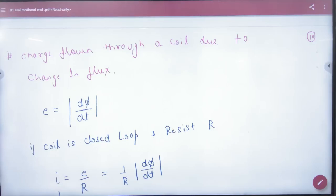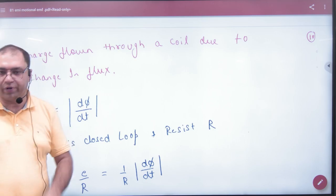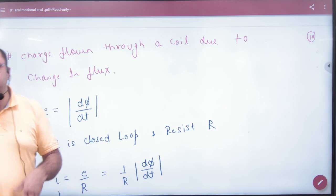Charge flown through a coil due to change in flux. Now what is going to happen? I think the flux is changing. The current in the wire has been formed. So how much charge has been formed?